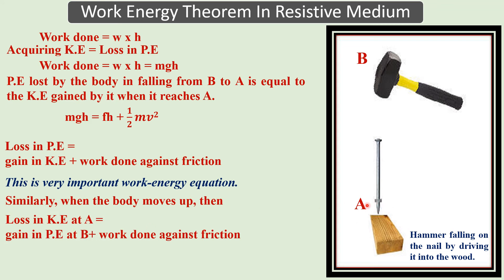Similarly, when the body moves upward, the loss in kinetic energy at A equals the gain in potential energy plus the work done against friction.